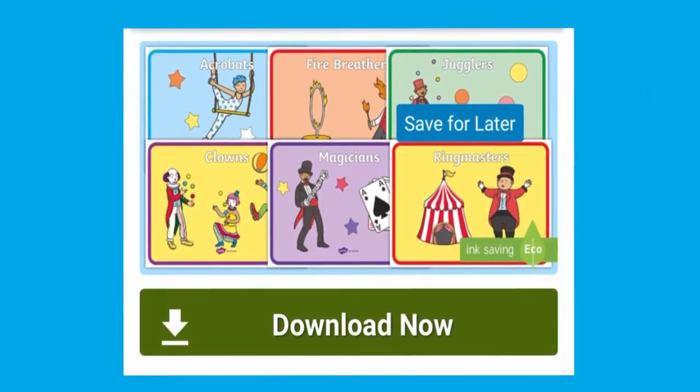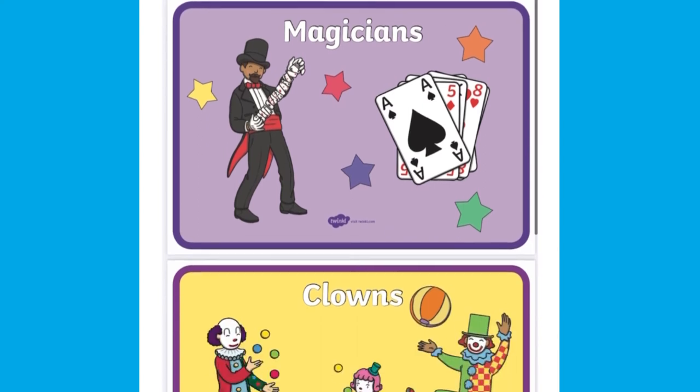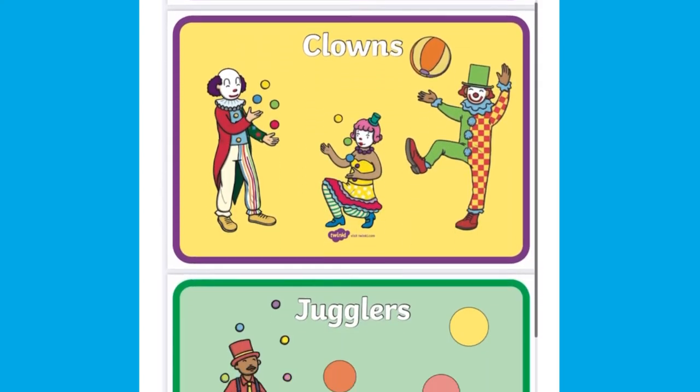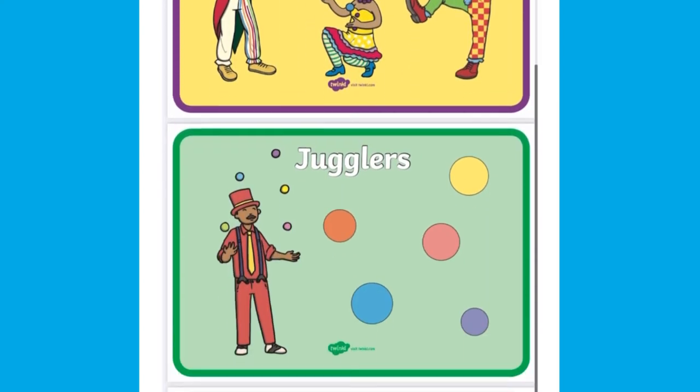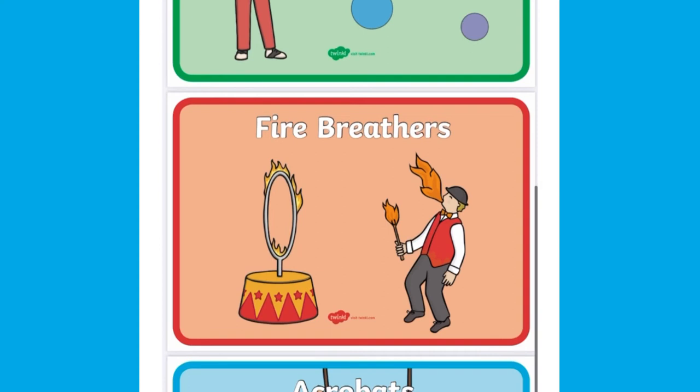These circus group signs are ideal for placing on tables to give each group or activity an identity and to support classroom organisation and planning.